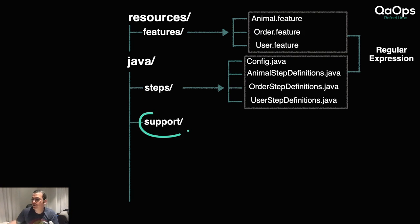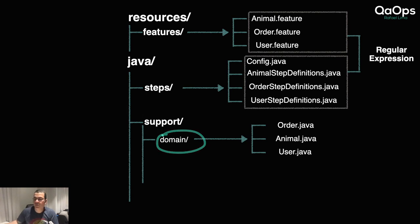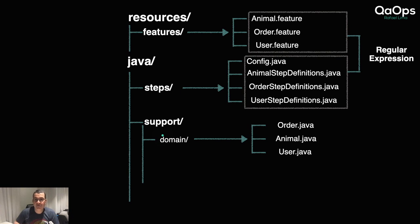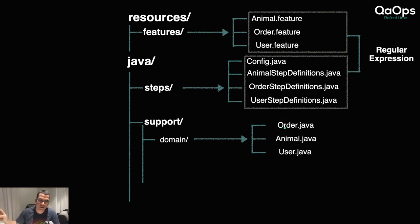We're also going to have a support package for our support code, and a domain package. Since we're working with APIs and services — sending and receiving JSON — we need to map those into Java classes. In Ruby or Python it's a bit less verbose and you don't necessarily need a class, but in Java it's easiest to map each JSON structure to a domain class. I'll be covering REST Assured and everything here in depth when we look at the actual code.